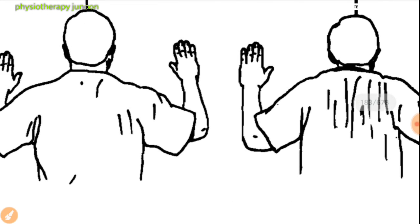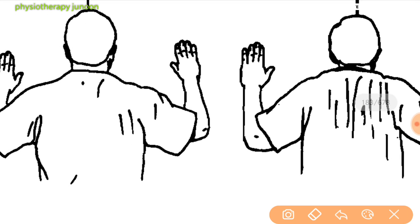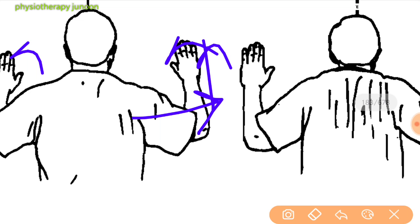Next is the pectoralis major stretch. Stand facing a corner, position one arm on each side of the corner with the arm approximately 90 degrees away from the side and the forearm resting on the wall. Lean forward into the corner until a stretch is felt at the front of the shoulder. Hold for 5 seconds and repeat.